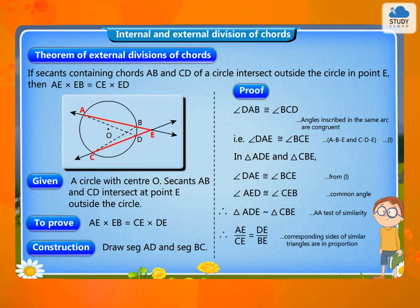Therefore, triangle ADE is similar to triangle CBE. Therefore, AE/CE = DE/BE, and therefore AE × EB = CE × DE.